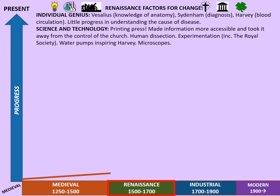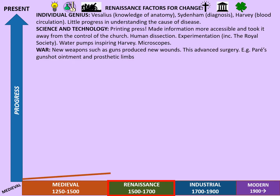Science and technology finally see some progress. The big one is the printing press, which made information more accessible and took it away from the control of the church. Human dissection became possible, and experimentation including the Royal Society became possible too. Water pumps and other technologies were also inspiring — water pumps in particular inspired Harvey's idea about circulation of the blood — and we have the introduction of microscopes, which become increasingly important. War is also important: new weapons such as guns produce new wounds, which advanced surgery, for example Ambroise Paré's gunshot ointment and prosthetic limbs.